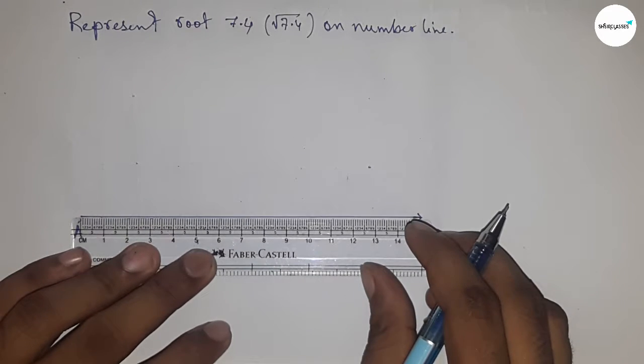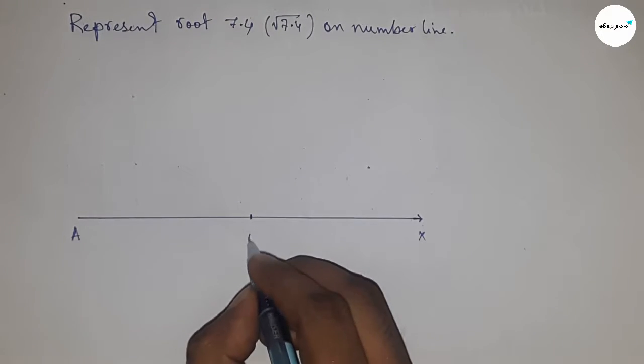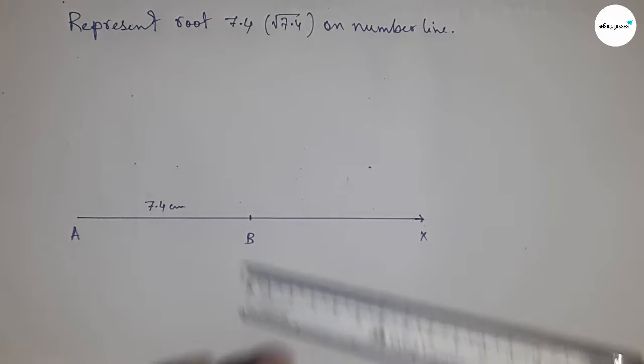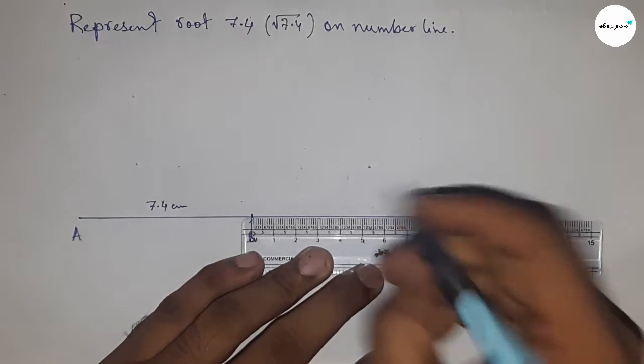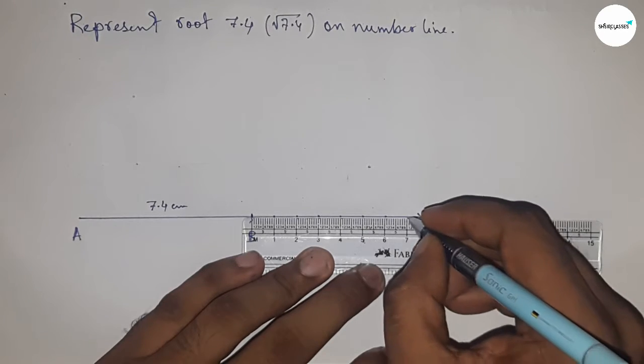Next, taking a length of 7.4 centimeters, marking this as point B. So AB equals 7.4 centimeters. Now mark the numbers on the line from B to X using a scale.